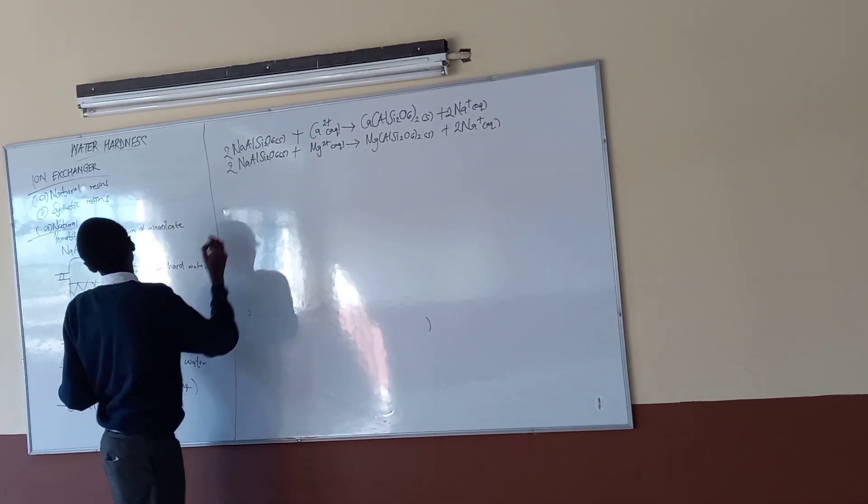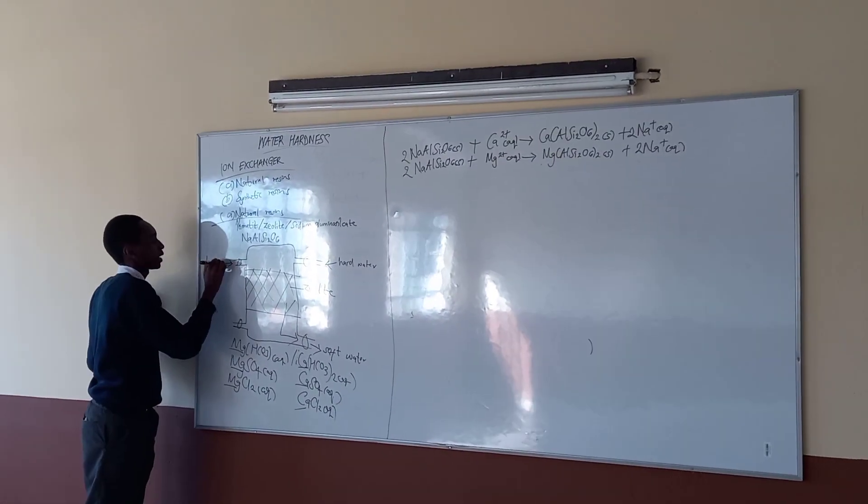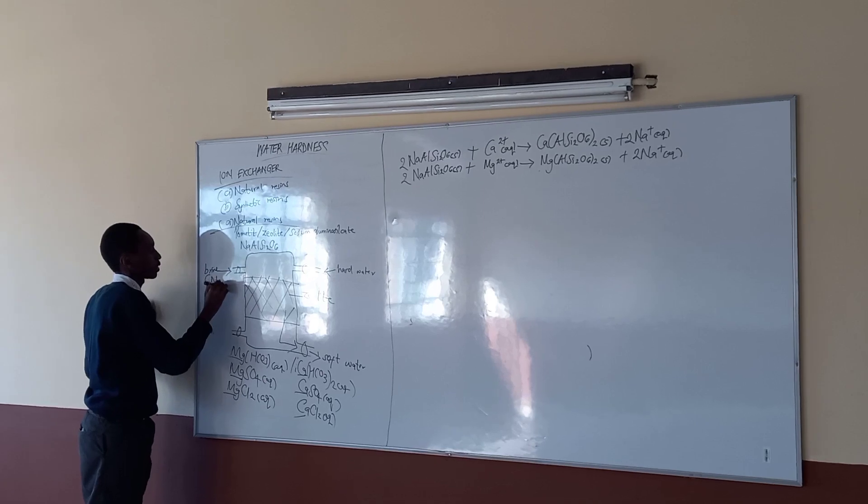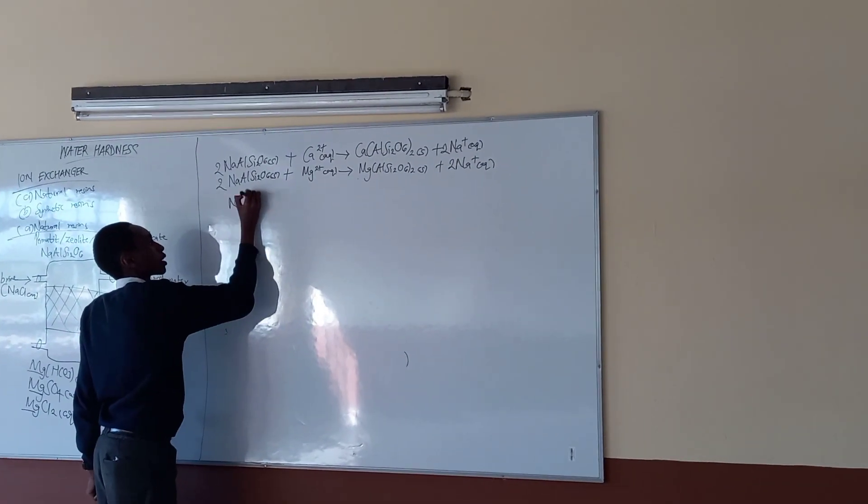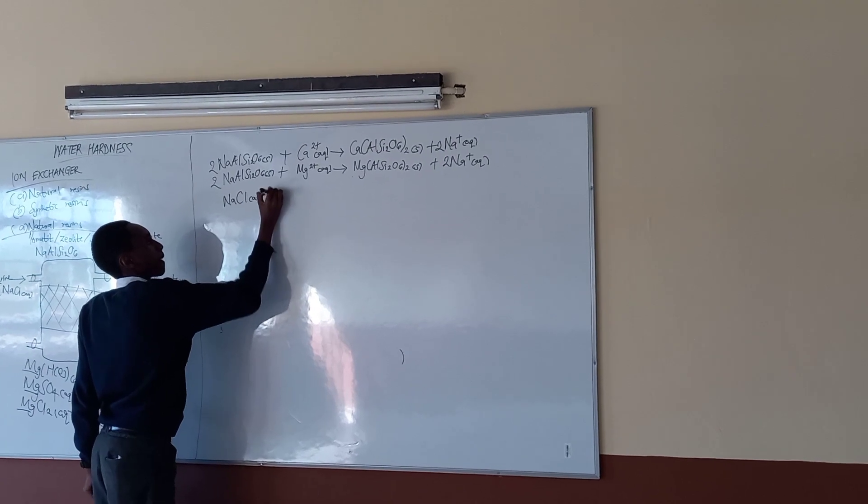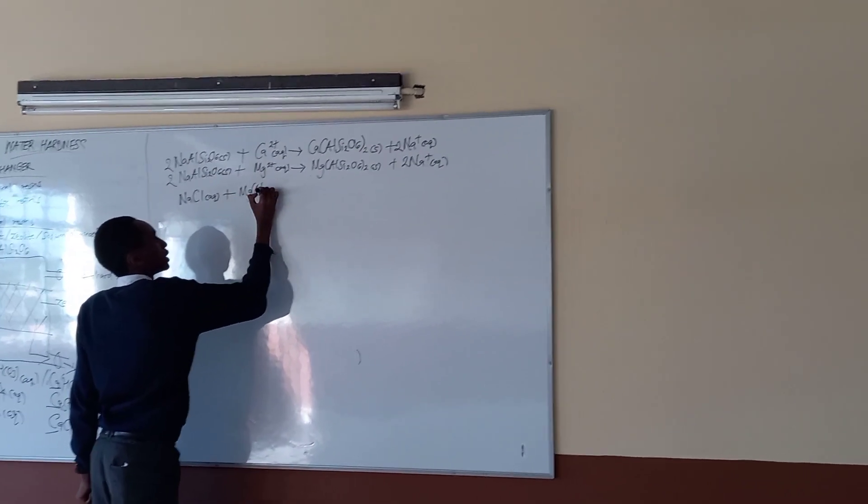So the calcium aluminum silicate or magnesium aluminum silicate is in the tank, and we want to restore the sodium aluminum silicate. So, we will bring in brine through this pipe. Brine is sodium chloride aqueous. Sodium chloride aqueous plus magnesium aluminum silicate solid gives sodium aluminum silicate solid plus magnesium chloride aqueous.